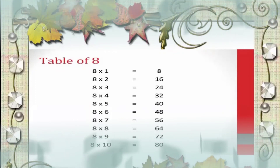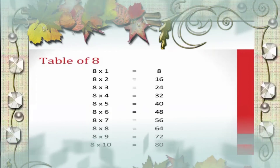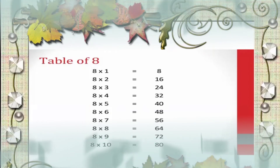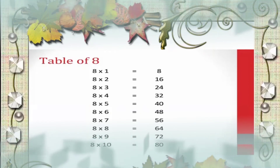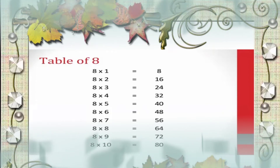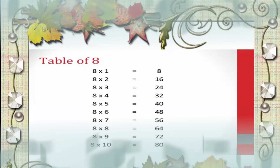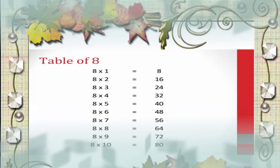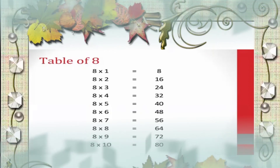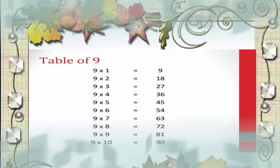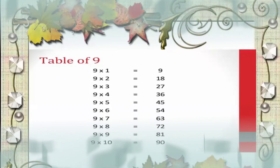Let us repeat. 8 1s are 8, 8 2s are 16, 8 3s are 24, 8 4s are 32, 8 5s are 40, 8 6s are 48, 8 7s are 56, 8 8s are 64, 8 9s are 72, 8 10s are 80.